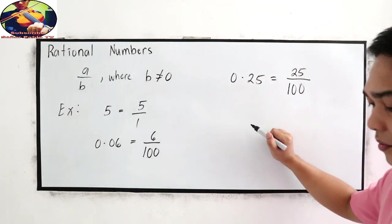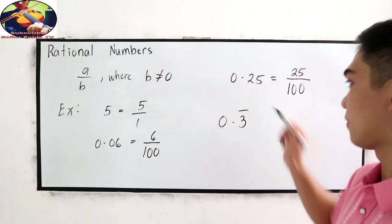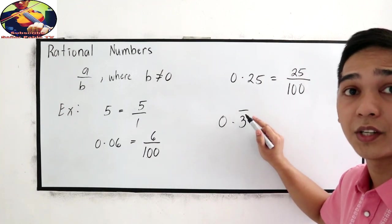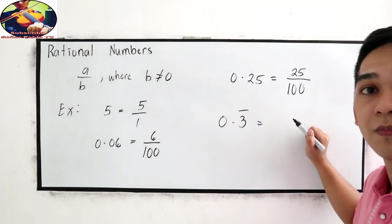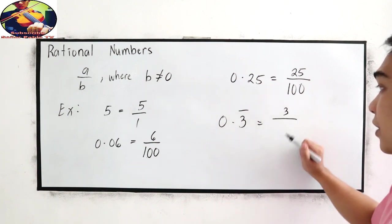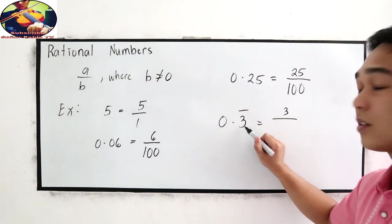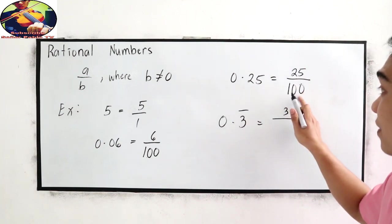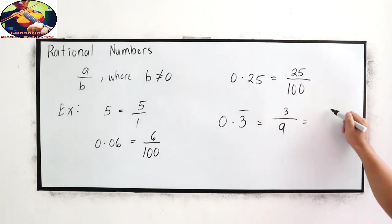We also have 0.3 with the bar sign on top of the number 3. This is equivalent to, copy the number 3 over, we have one decimal place, but instead of writing zeros, we're going to write 9. And to simplify, that is equal to 1 over 3.